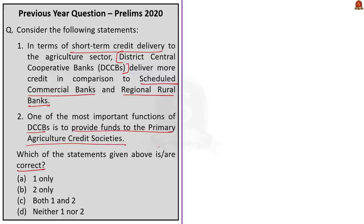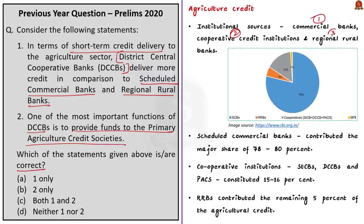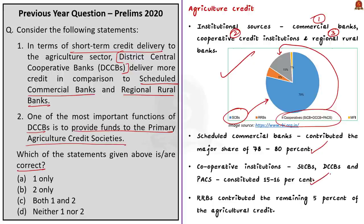The institutional sources of agriculture credit include commercial banks, cooperative credit institutions and regional rural banks. As per a comparative analysis, scheduled commercial banks contribute nearly 78% to 80% of agricultural and allied credit, while cooperative institutions contribute around 15% to 16%, and regional rural banks contribute the remaining 5%. Thus, Statement 1 — that district central cooperative banks deliver more credit than scheduled commercial banks and regional rural banks — is incorrect.